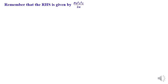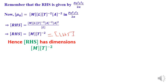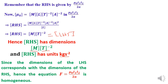Now, having obtained the dimensions of all physical quantities on the right-hand side, we determine the final dimensions of the right-hand side: μ₀I₁I₂ over 2A gives MLT⁻²A⁻² times A² divided by L, which simplifies to MT⁻². This equals the dimensions of the left-hand side. Since the dimensions of both sides correspond, the equation F = μ₀I₁I₂/2A is homogeneous.